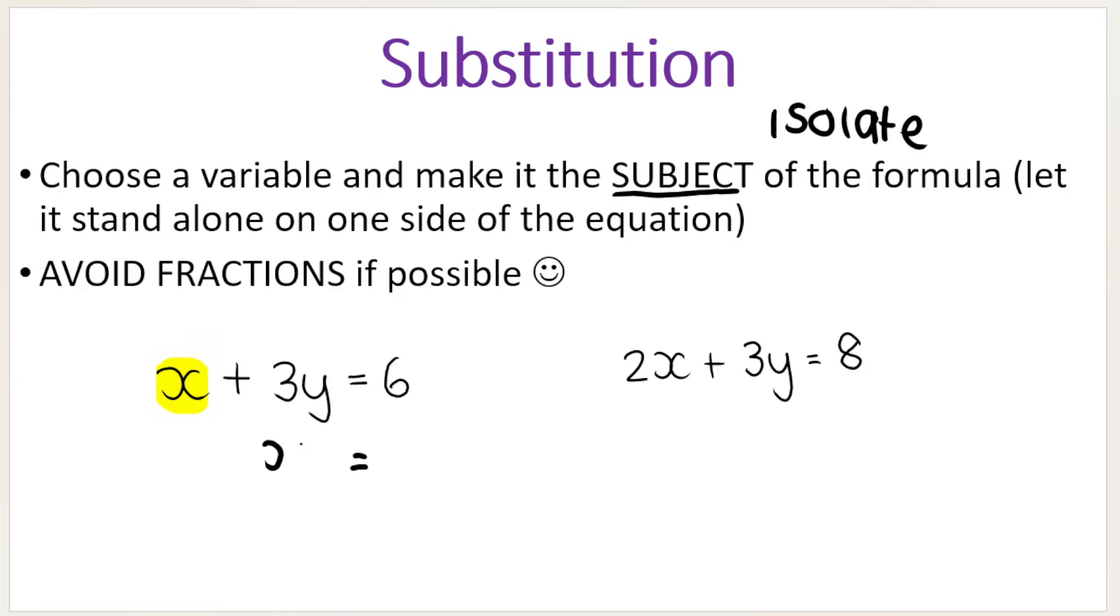A lot of my students will say the X is the easiest, and they're correct. Because if you make the X stand by itself, the inverse operation of adding 3Y is subtracting 3Y. So you've got the X standing all by itself. And then in the place of X in that equation, you will put 6 minus 3Y.